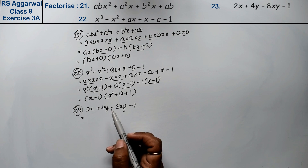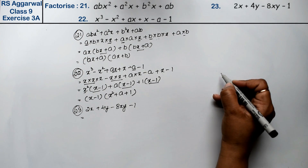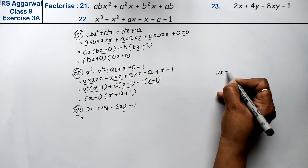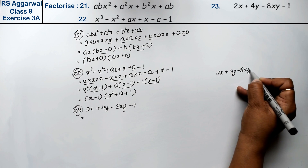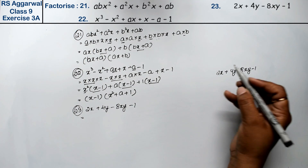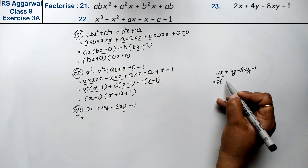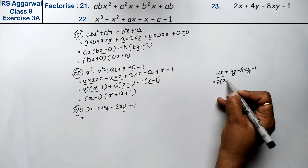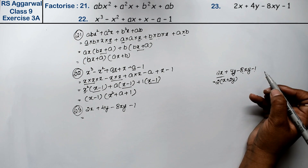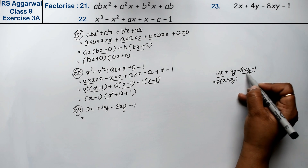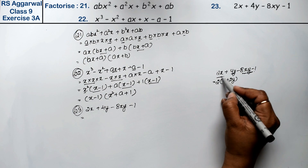Friends, let me show you roughly: 2x plus 4y minus 8xy minus 1. From the first two terms, only 2 is common. If 2 is common, then x plus 2y will remain. But from the last two terms, nothing is common. So this grouping is wrong — we can't take these two as pairs.